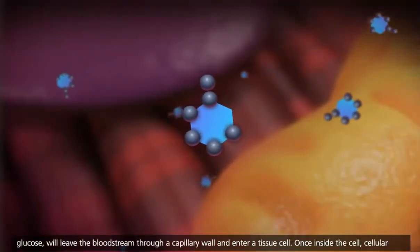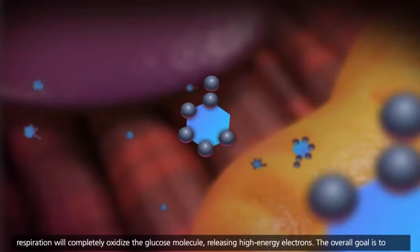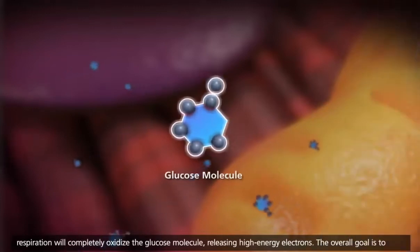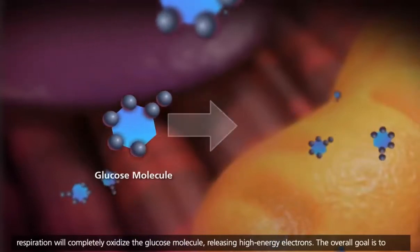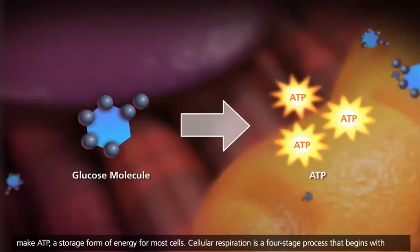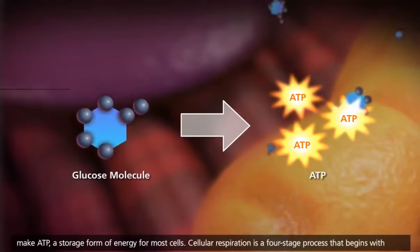Once inside the cell, cellular respiration will completely oxidize the glucose molecule, releasing high-energy electrons. The overall goal is to make ATP, a storage form of energy for most cells.